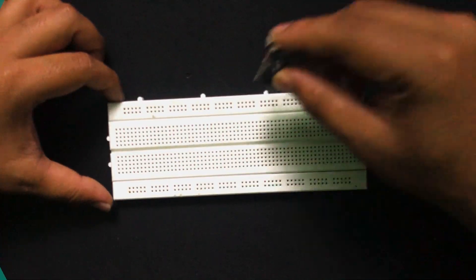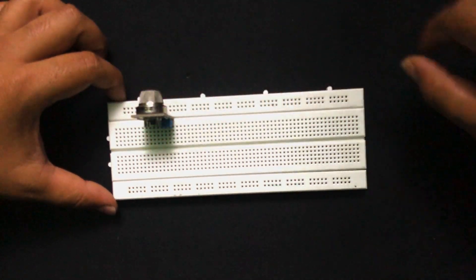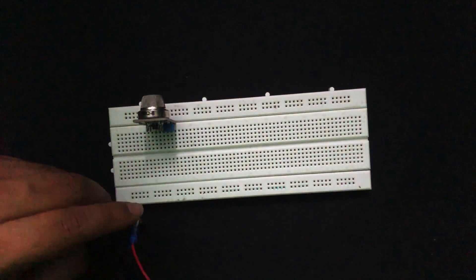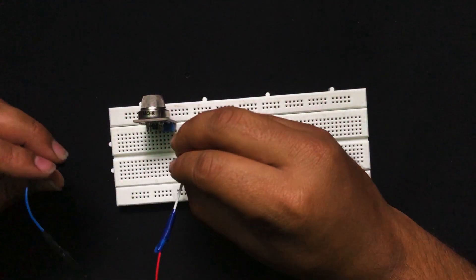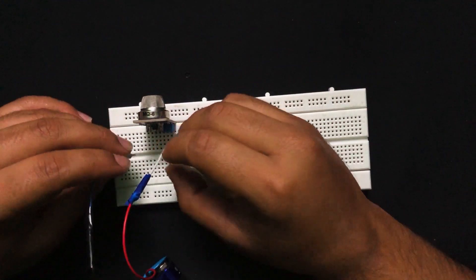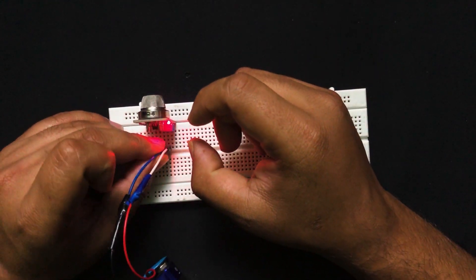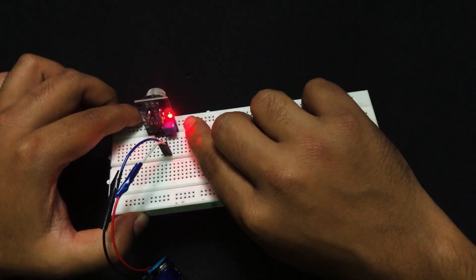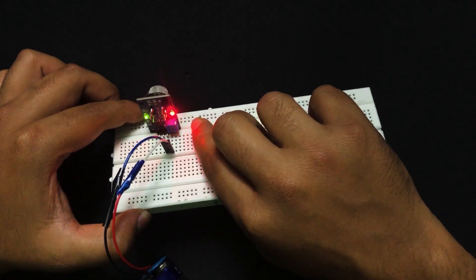Let us continue with the circuit. I'll take a breadboard and place the MQ6 sensor like this. Now let us connect our battery. I'll be connecting the positive terminal of the battery to VCC and the negative terminal to the ground of our sensor. As you can see, the sensor has lit up, indicating that the sensor has powered up.